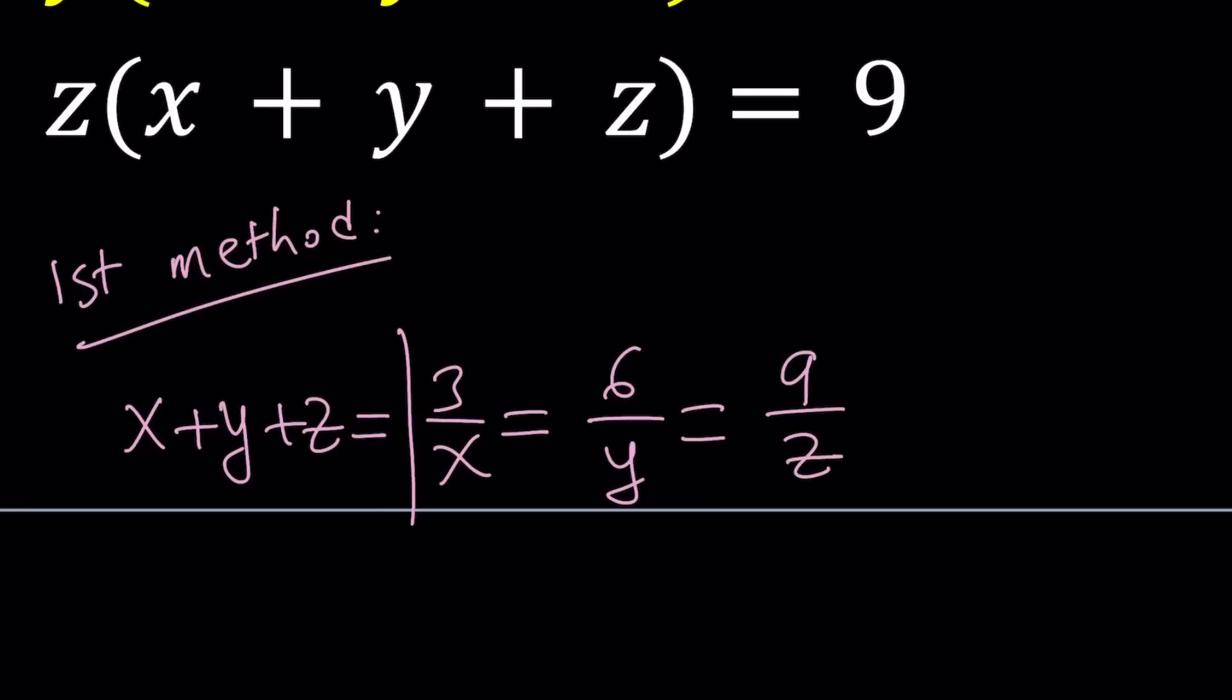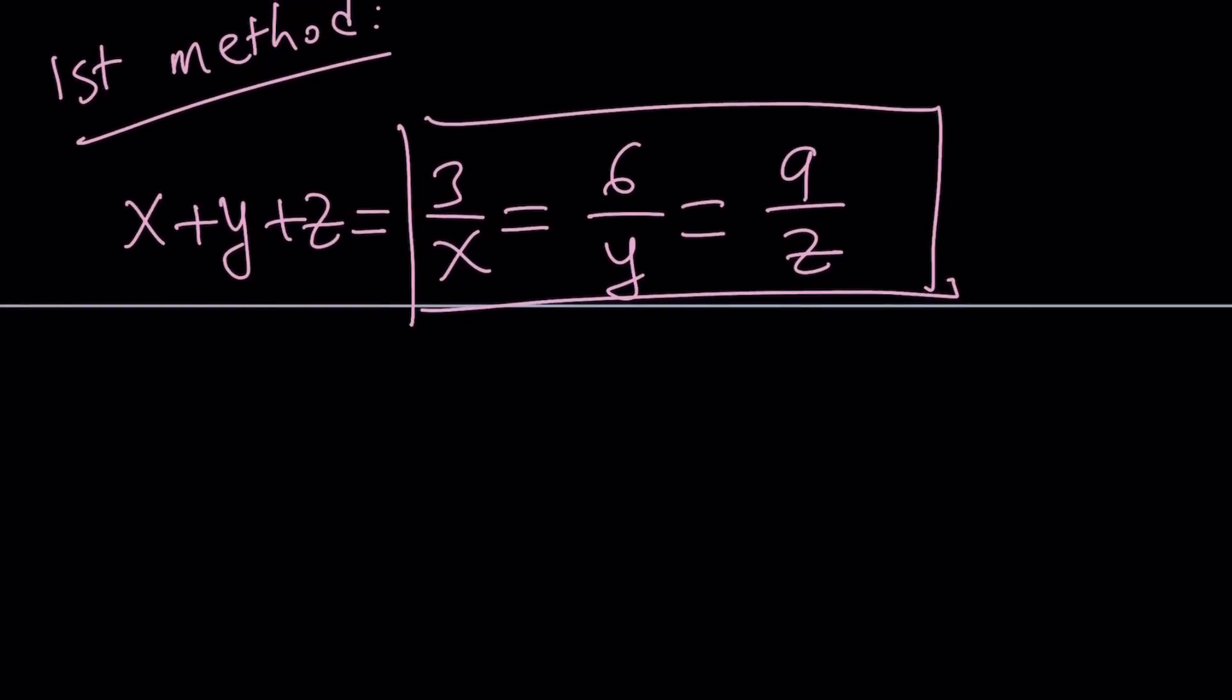So that kind of gives you a ratio among x, y, z. In other words, if x is 1, then y is 2, and z is 3. So from here, we can kind of say the following. If x is x, then y is going to be 2x, and z is going to be 3x. Make sense?